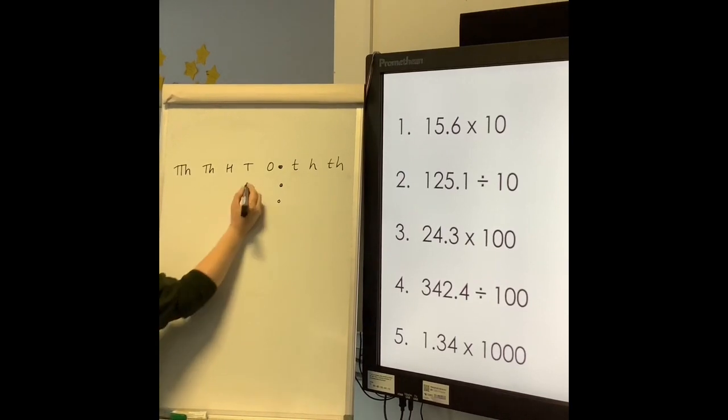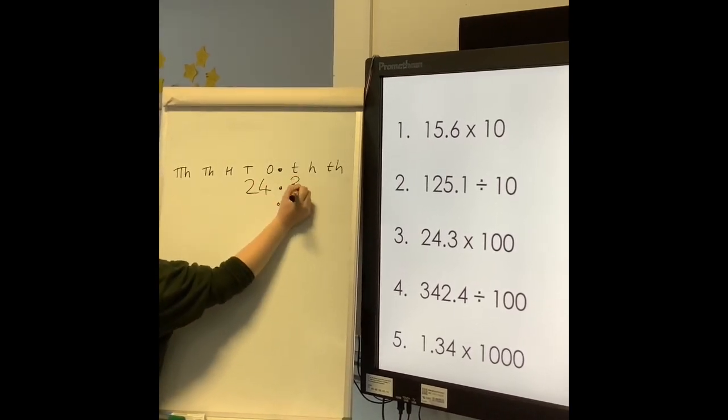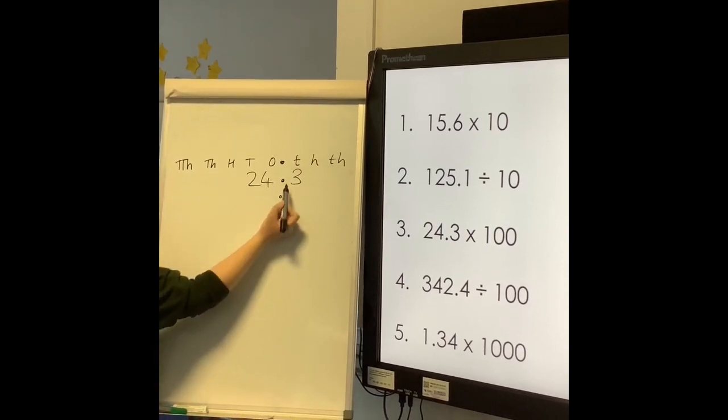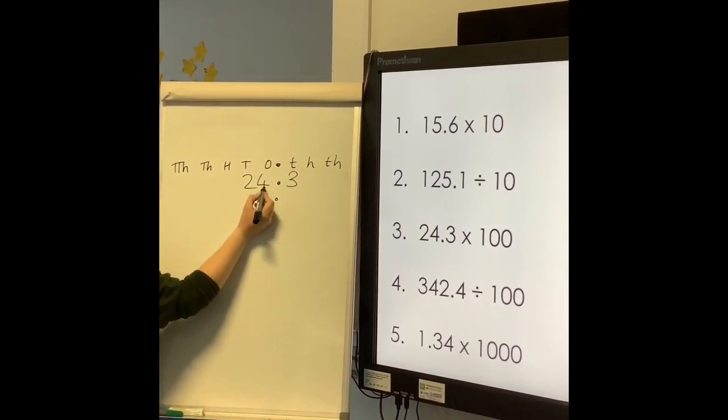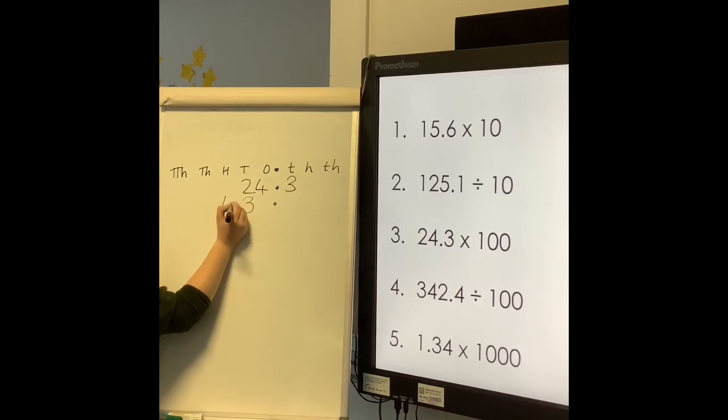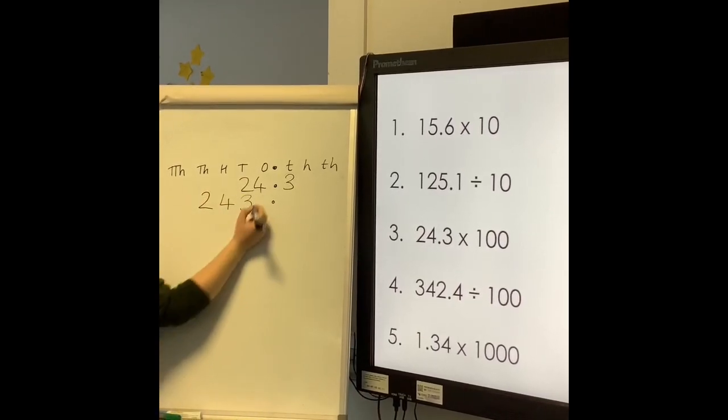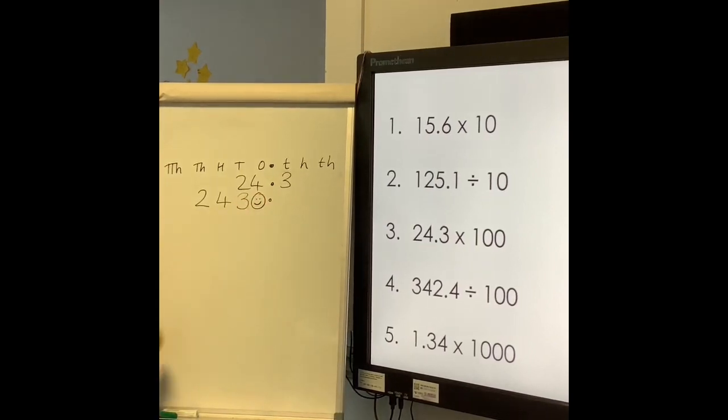Number 3: 24.3 times 100. This time we're moving up two place value columns, so the 3 tenths moves into the tens column, 4 ones become 4 hundreds, and 2 tens become 2 thousands. The most important thing this time is to add in your placeholder.